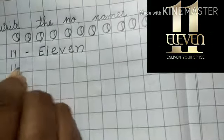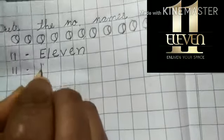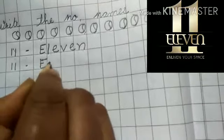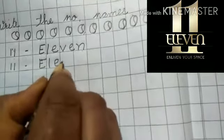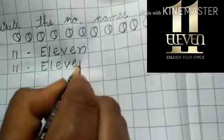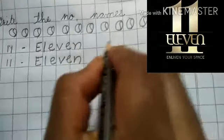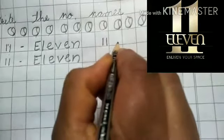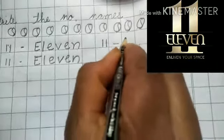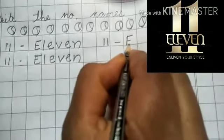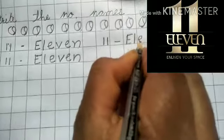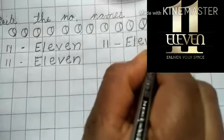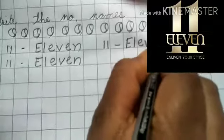You write again with me. 11 dash, read it and write, E L E V E N. Again write in front of 11 dash E L E V E N.